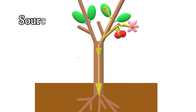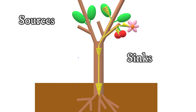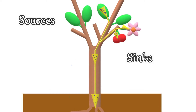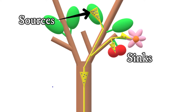Phloem moves sap containing sugars from what are called sources to sinks. Sources are the leaves or tissues that create the sugars, and sinks are the parts of the plant that don't photosynthesize and need those sugars — parts such as buds, flowers, seeds, and fruits. It is believed that the sugars are moved through the help of osmosis. At the source, sugars are most concentrated, which causes nearby water to flow into the phloem, creating more pressure. This high-pressure sap then wants to move to an area of lower pressure — a nearby sink that is using up those sugars — so the sap flows from the source to the sink.